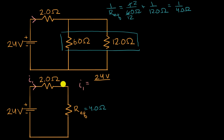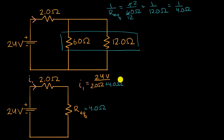When you have resistors in series, you just add them up to find the equivalent resistance. So this is 24 volts divided by 2.0 ohms plus 4.0 ohms. 24 divided by six is four, and since we're dealing with two significant digits, that gives us 4.0 amps.